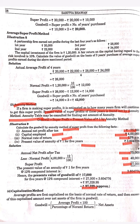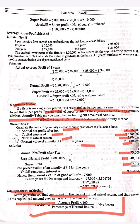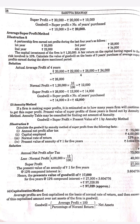Next is the capitalization method. Average profits are first capitalized on the basis of the normal rate of return, and then the excess of the capitalized amount over the net assets of the firm is the goodwill. The formula is: Goodwill = (Average Profit × 100 / Normal Rate of Return) − Net Assets.